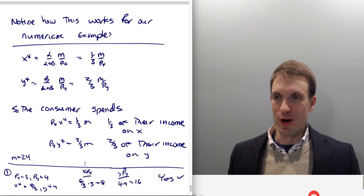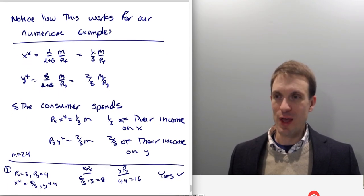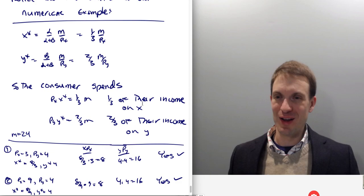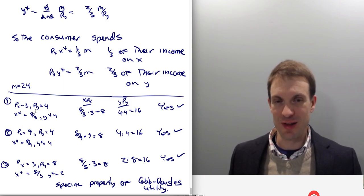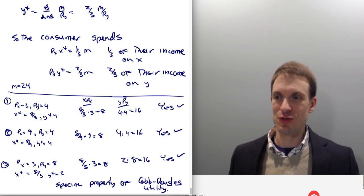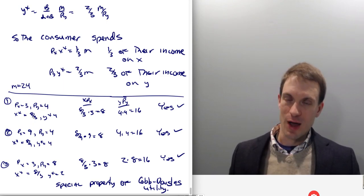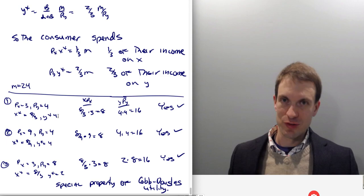So notice how this works for our numerical example. Here in our numerical example, we end up getting 1/3 and 2/3. So the consumer is going to spend a third of their income on good X. My optimal expenditure is going to be a third of my income on X and two thirds of my income on Y. So what's happening here, let's check this. Let's verify in the different situations I gave us. Price of good X is three. Price of good Y is four. So how much X did we get? 8/3. How much Y did we get? Four. And let's see, is my expenditure a third of my income? Income was 24. Yeah. Eight is a third of 24. And 16 is 2/3 of 24. It holds.